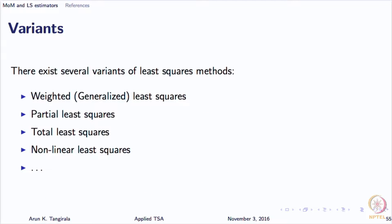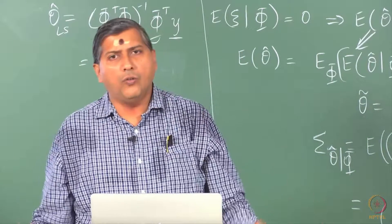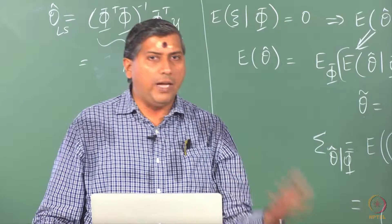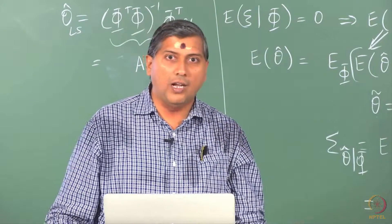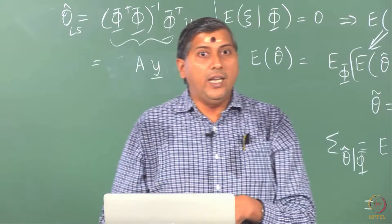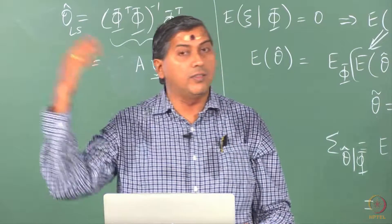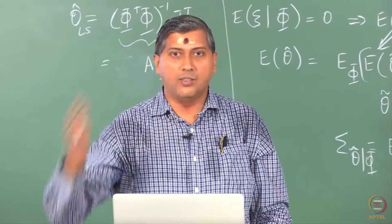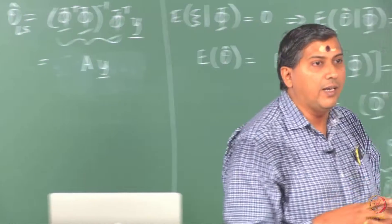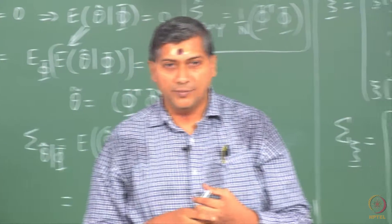There are other variants of OLS, that is least squares. The original version is what we have discussed, then came about many other variants. You have weighted least squares, partial least squares, total least squares, nonlinear least squares, generalized least squares, and so on. The two important ones of interest to us are the weighted least squares and the nonlinear least squares.